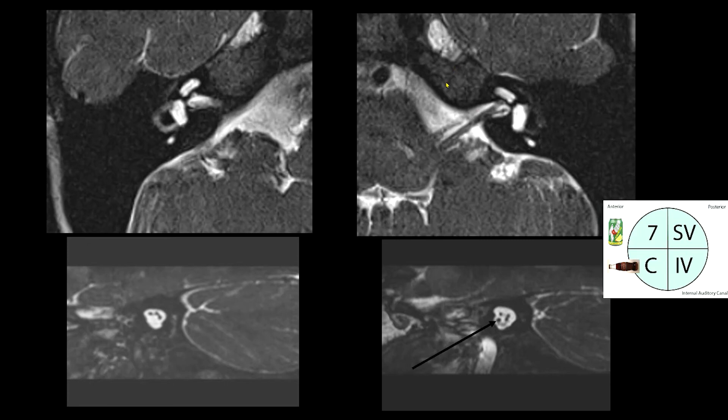In this example, we can see that anteriorly is the front of the face, and posteriorly is the cerebellum. We can see anterior and superior — the seventh cranial nerve; anterior and inferior — the cochlear nerve; and more posteriorly within the internal auditory canal are the superior and inferior vestibular nerves.